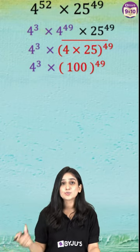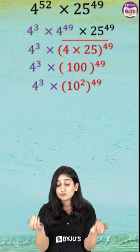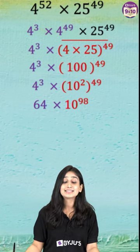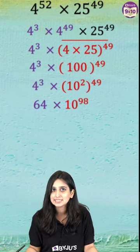Now, if you write 100 as 10 square, it will look like this. If you simplify it further, you will get 64 into 10 to the power 98.